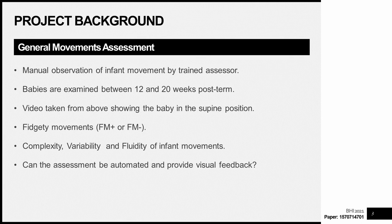The General Movements Assessment is a manual observation of infant movement carried out by a trained assessor. Babies are examined at a specific window in their development, typically between 12 and 20 weeks post-term. The assessment typically lasts anywhere between 3 and 5 minutes and comprises a video taken from above showing the baby lying on its back in a supine position. This video is then analysed whereby specific movement patterns — known as fidgety movements — are identified and classified, looking for complexity, variability and fluidity. If fidgety movements are present the infant will develop normally; if absent, there is a good chance they will go on to develop cerebral palsy.